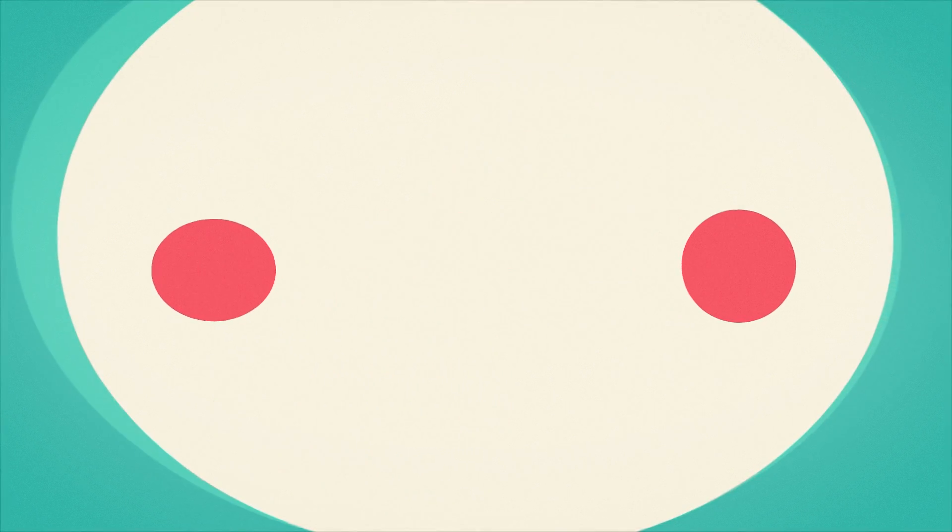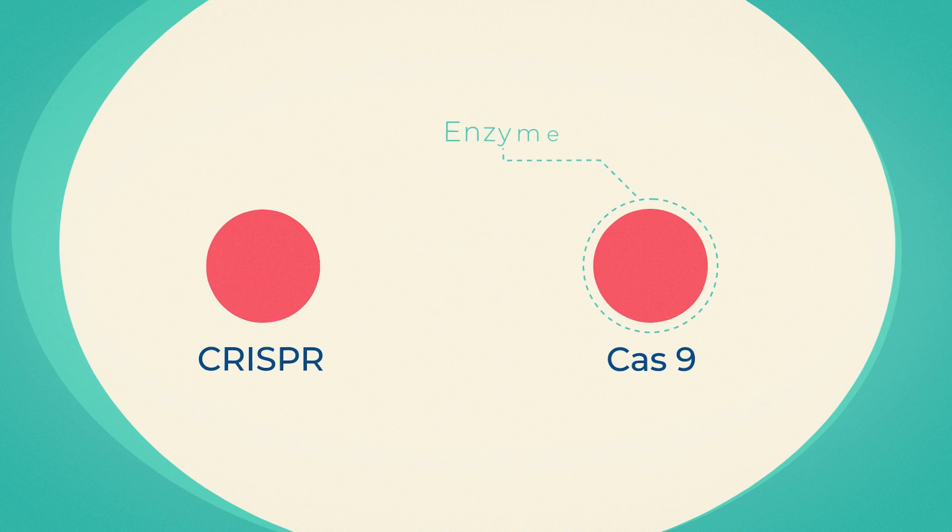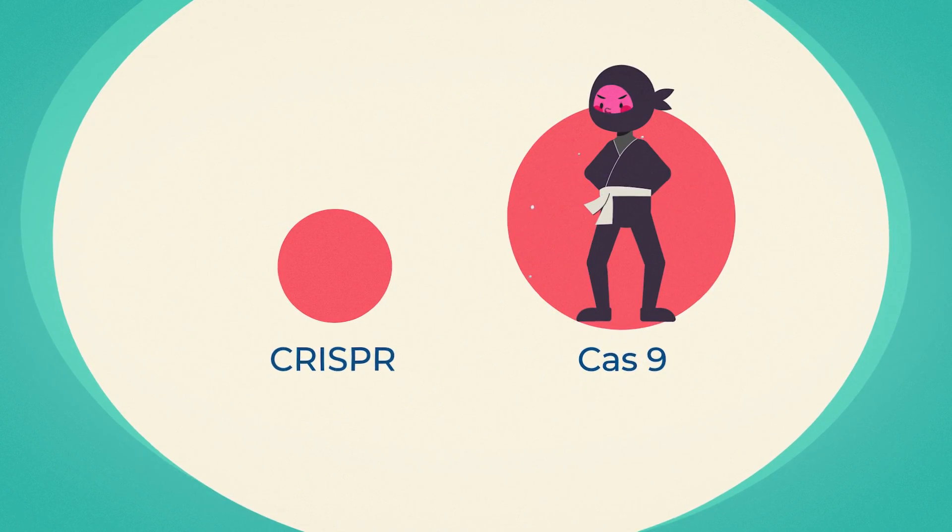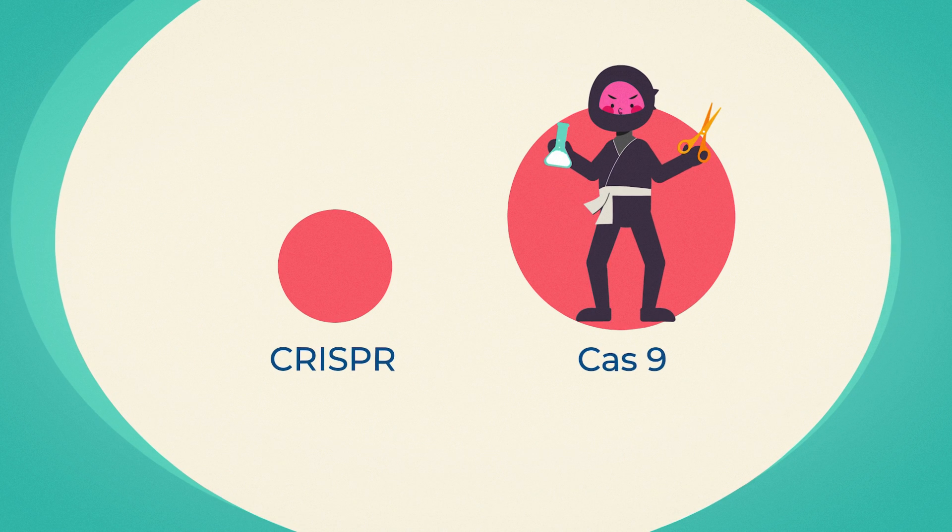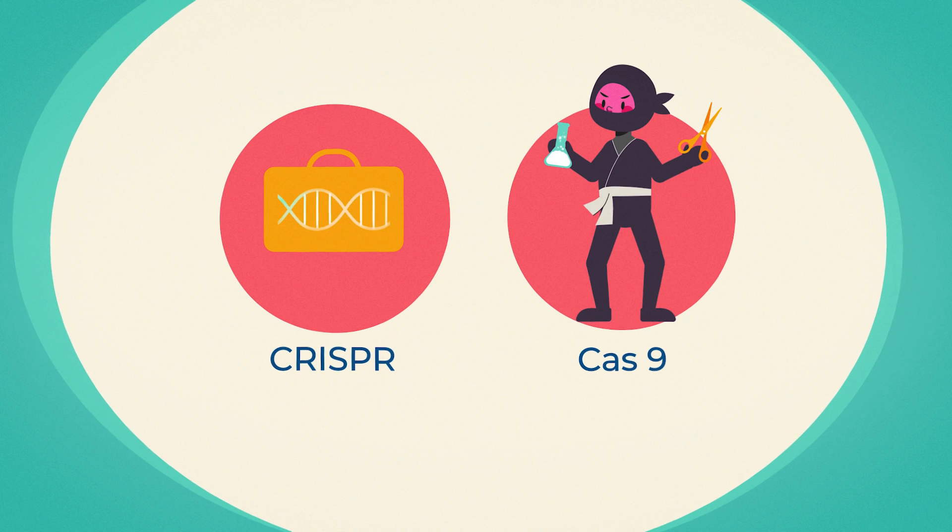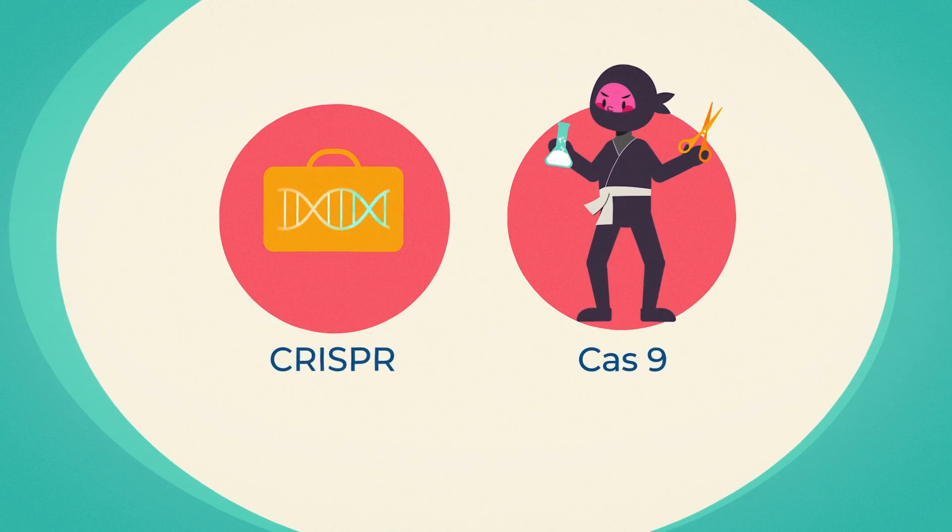CRISPR-Cas9 is made of two parts. Cas9 is an enzyme, a protein that activates a chemical reaction and a trained assassin of bad DNA. CRISPR-RNA, or guide RNA, are short strands of RNA that match the targeted gene.